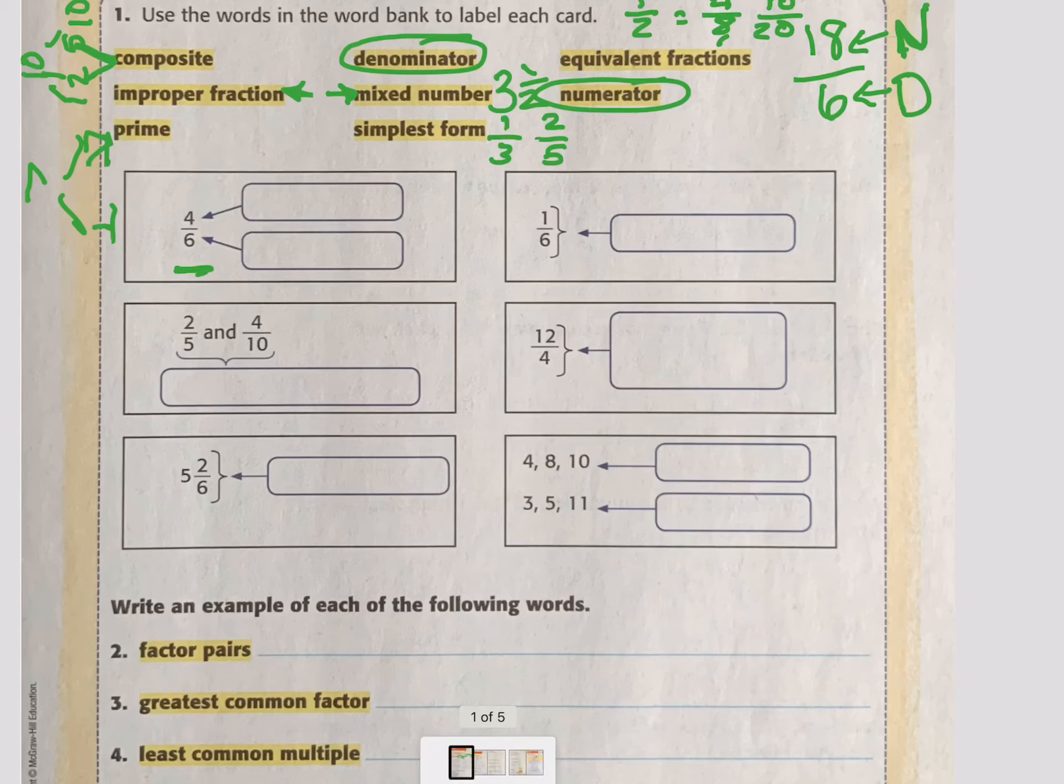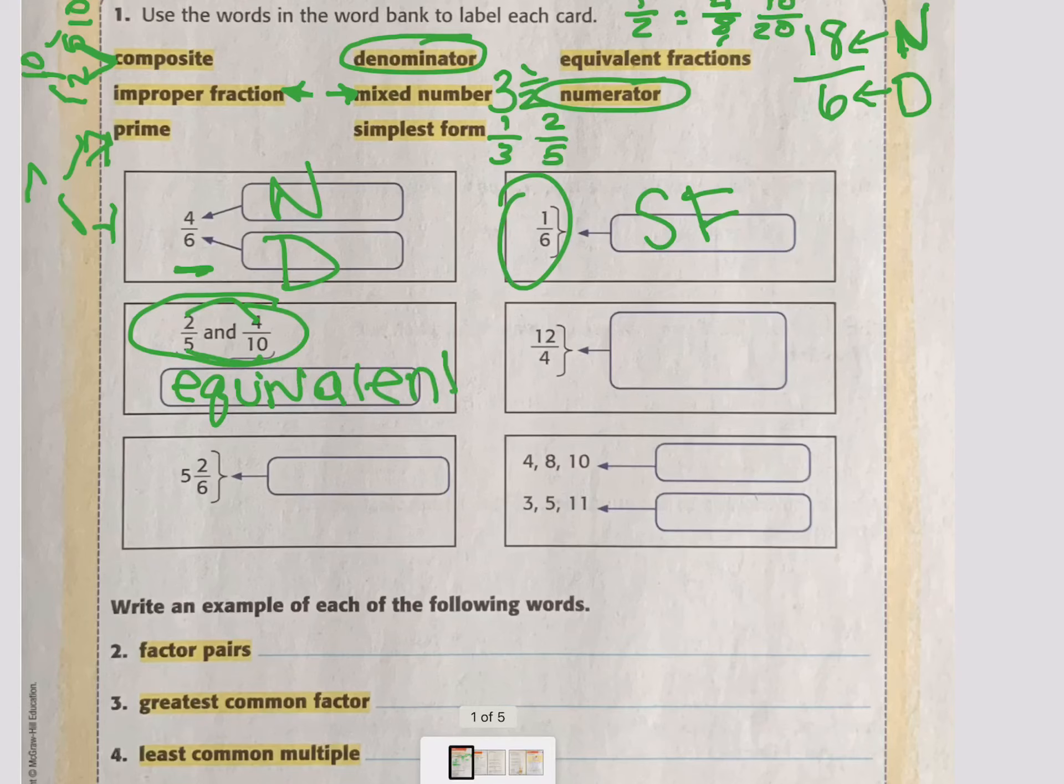So let's see now. For 4/6, 4 is the numerator. 6 is the denominator. Good. 1/6, what is that showing me? Good. It's showing me simplest form. 2/5 and 4/10. Those are what? Good. Those are equivalent fractions, because 2 times 2 is 4, 5 times 2 is 10.